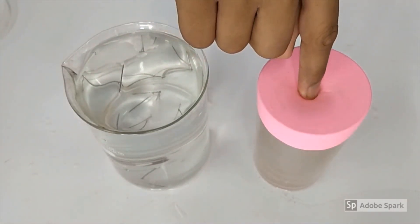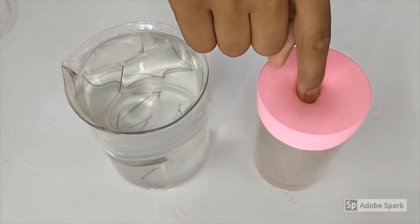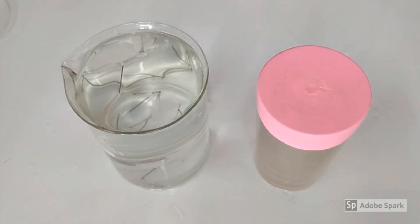Thus, by placing the pin uniformly and very gently on the water surface, the pressure due to the weight of the pin is drastically reduced and is not sufficient to rupture the water surface. Thus, the steel pin floats.